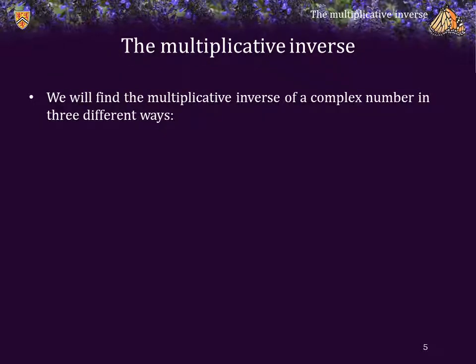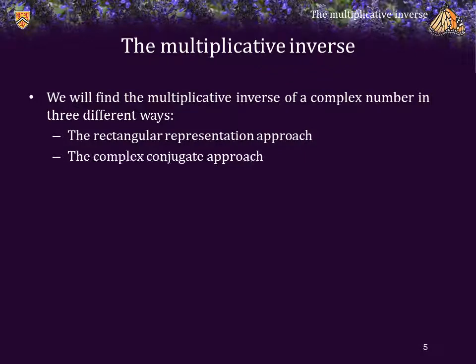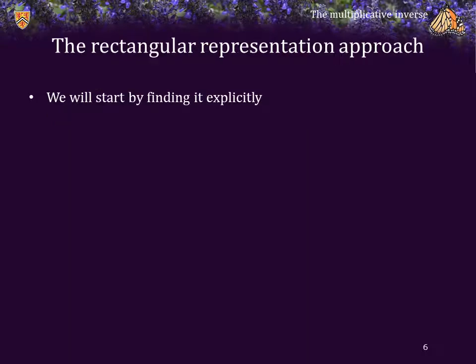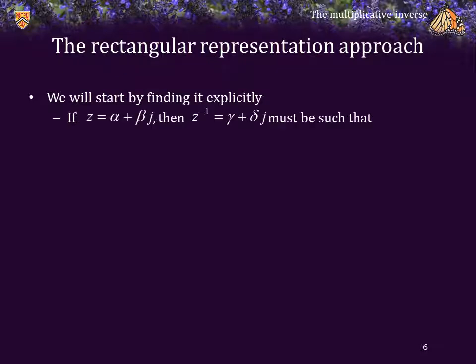We are going to find the multiplicative inverse of a complex number in three different ways. First, we will look at the rectangular representation approach. Then, we will use the complex conjugate to rationalize the denominator. Finally, we will look at the polar representation approach. Starting with the rectangular representation approach, we will find the inverse explicitly.